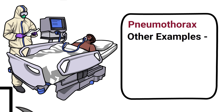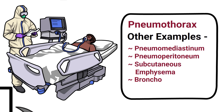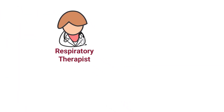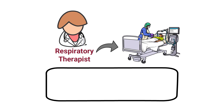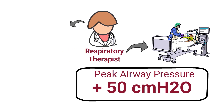Other examples include pneumomediastinum, pneumoperitoneum, subcutaneous emphysema, or a bronchopleural fistula. As a respiratory therapist, one thing to keep in mind for patients receiving mechanical ventilation is that once the peak pressure gets above 50, you need to start worrying about pulmonary volutrauma.